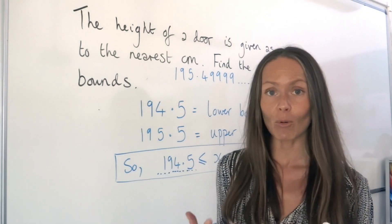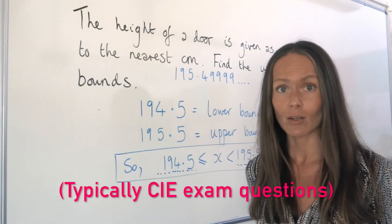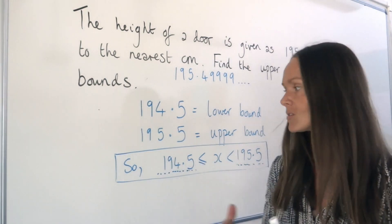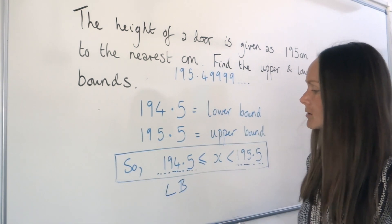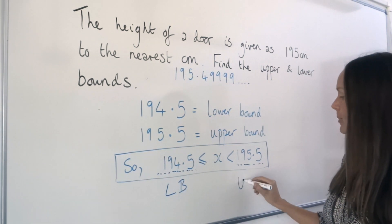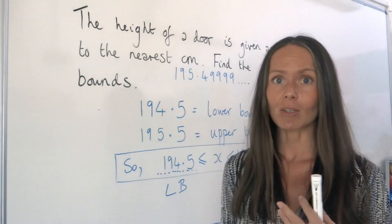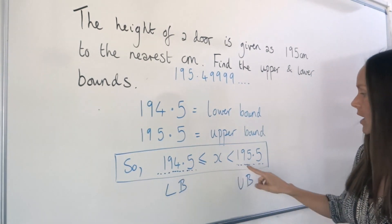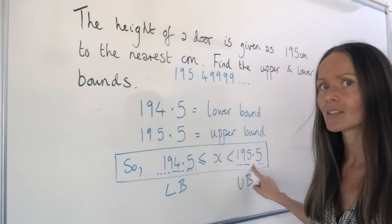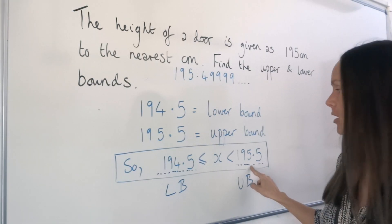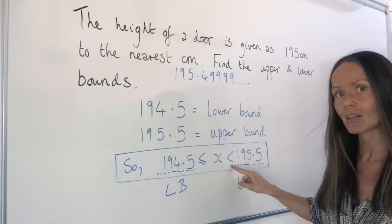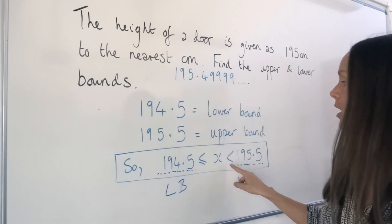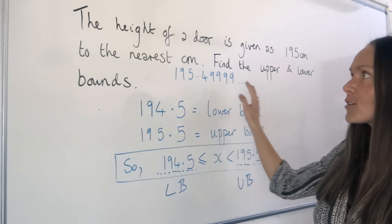Often in exam questions, they want you to write the lower and upper bounds in terms of an inequality like this. X represents the region of measurements. You write the lower bound on the left and the upper bound on the right. That means the measurement of the door could have been anything from 194.5 all the way up to 195.5, but not including it. We don't include that number — that's why the inequality sign doesn't have a line: X is less than 195.5, but not equal to it.